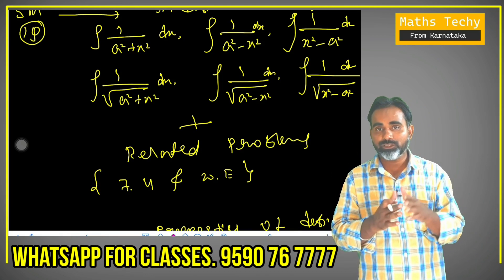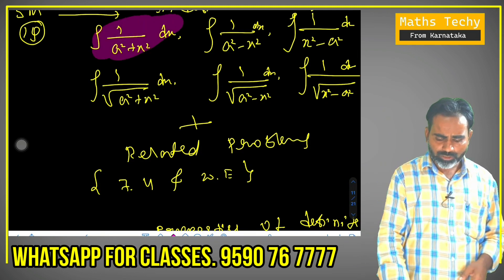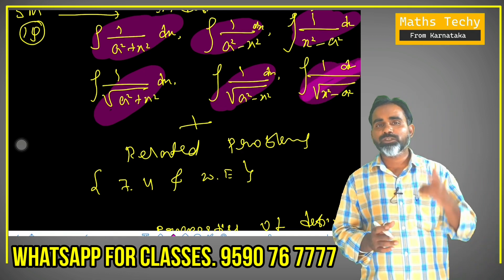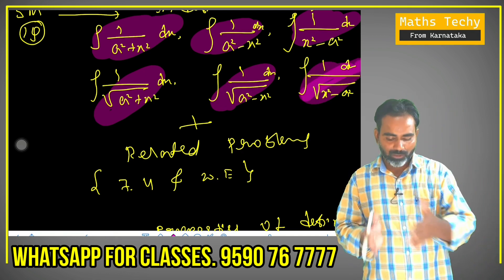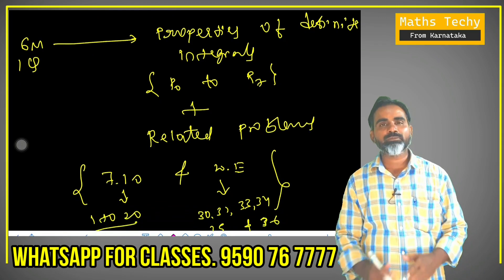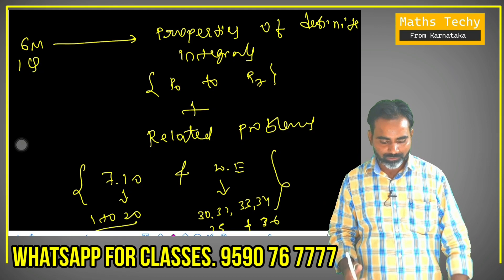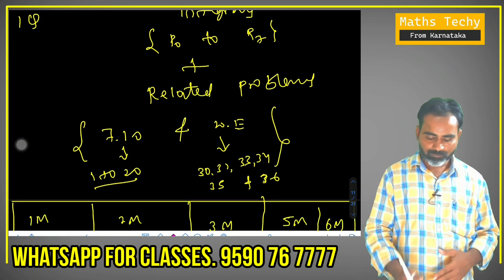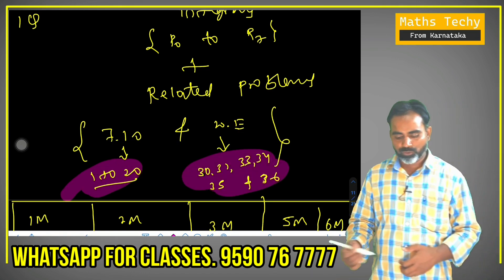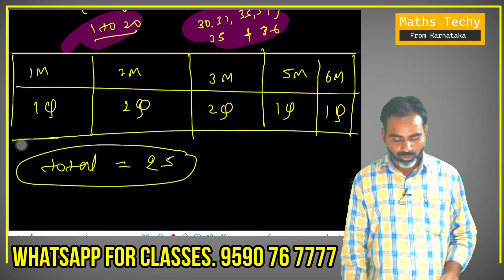The standard integrals are removed — the overall model. We have related problems. If you have 7.4 and worked examples, you have 5 marks — the same question and 6 marks. Practice related problems. If you have 7.5 and worked examples, question numbers 1 to 20, plus problems 31, 33, 34, 35 and 36 — these are all worked examples. Total marks are 25 marks.